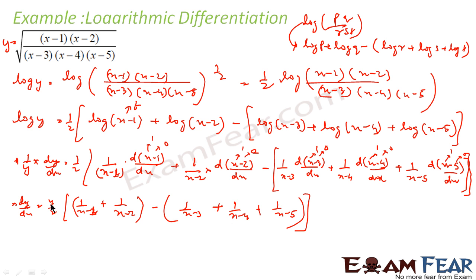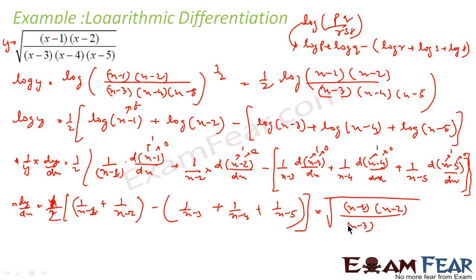And now if I want to write the value of y, y is this: so instead of y, let me write: dy by dx equals 1 by 2 times root of (x minus 1)(x minus 2) over (x minus 3)(x minus 4)(x minus 5), times [1 by (x minus 1) plus 1 by (x minus 2) minus 1 by (x minus 3) minus 1 by (x minus 4) minus 1 by (x minus 5)]. And that is my answer. Such a complex polynomial, we were able to differentiate using the power of log — put log on both sides, got a simplified equation, differentiated, got the answer.